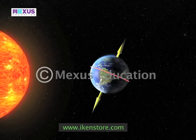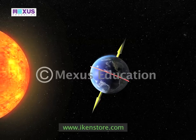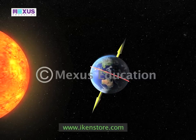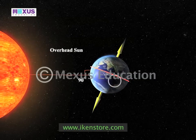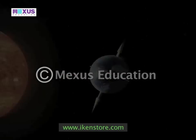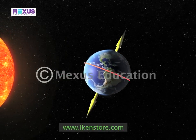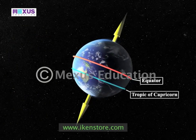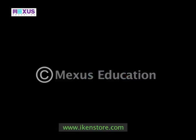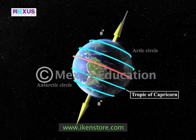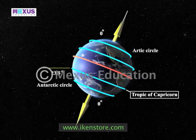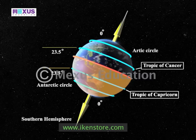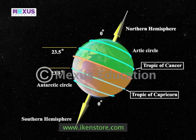Since the axis is tilted, different parts of the globe are oriented towards the sun at different times of the year, which is determined by the relationship between the overhead sun and the earth. Along with the axial tilt, the two other integral components in the process of seasonal change are the Tropic of Capricorn — situated at 23.5 degrees in the southern hemisphere — and the Tropic of Cancer at 23.5 degrees latitude in the northern hemisphere.